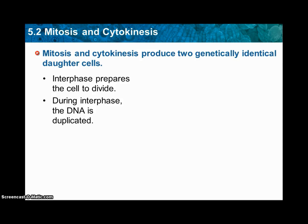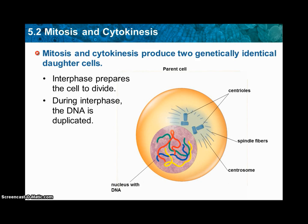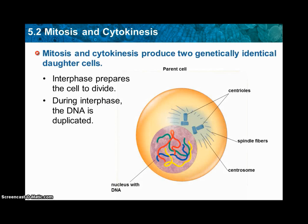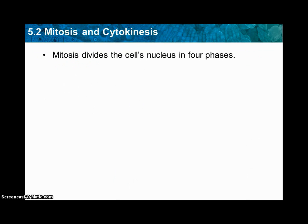During interphase, DNA is also replicated, so we do have a parent cell. If you look at that, you should see all the organelles used during replication — the centrioles, the spindle fibers, chromosomes, and the nucleus with the DNA. That's a parent cell.